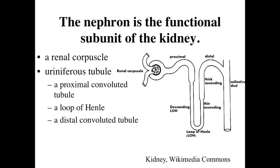The nephron is the functional subunit of the kidney. If we take a look at this simple diagram, what we can see is that the nephron is going to be composed of a renal corpuscle, which is essentially the blood filtering unit. We're going to have a very rich capillary bed, surrounded by a structure which allows us to collect the filtrate - the materials filtered out of the cardiovascular system.